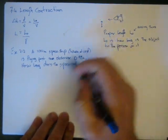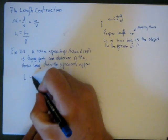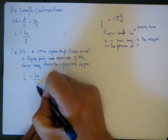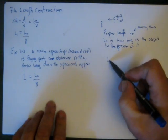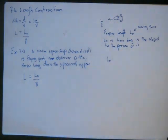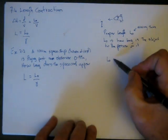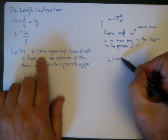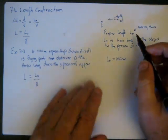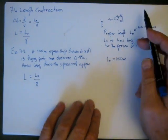We have to work out a couple of things. We're going to use our equation L equals L0 over gamma. L0 is how long is the object when it's at rest relative to the observer. So L0 in this case, when this thing's parked it's 100 meters long. When it's moving to the person in the cockpit it's 100 meters long.